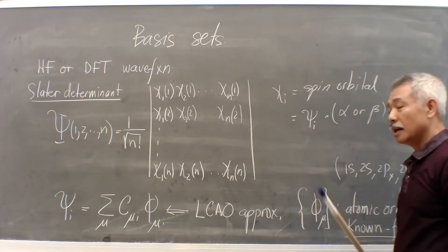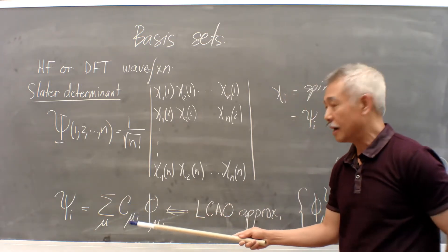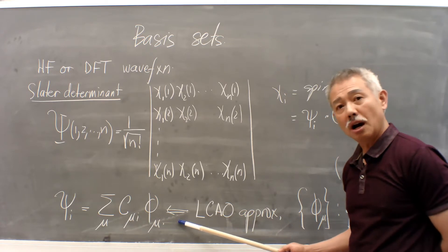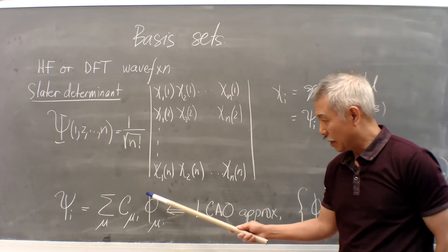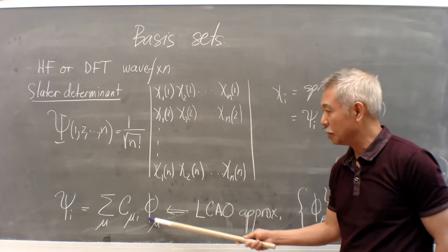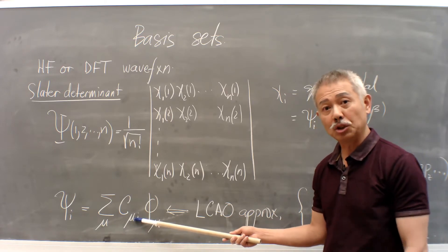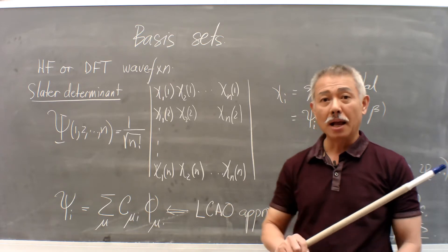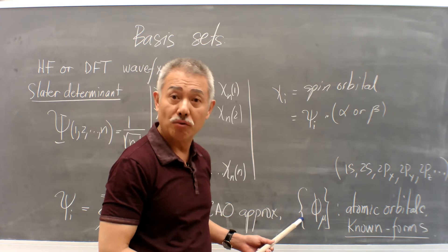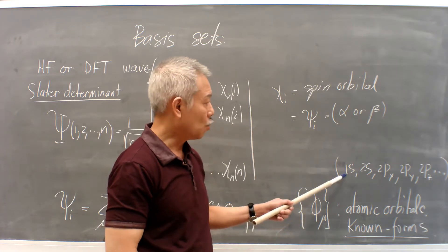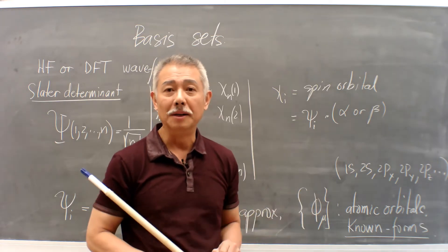Now, how are the molecular orbitals represented? The molecular orbitals represent a linear combination of the atomic orbitals in the LCAO approximation. We expand by the atomic orbitals, and these are MO coefficients — we use the variational principle to determine them. This set of orbitals — 1s, 2s, 2px, 2py, 2pz — are known. In principle, we are done.